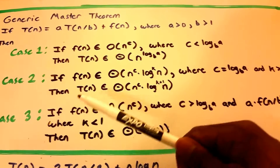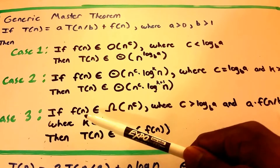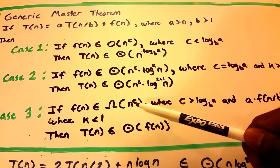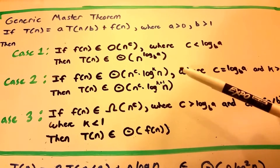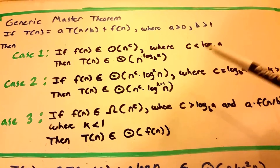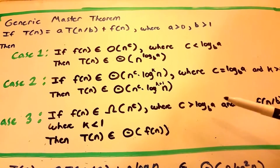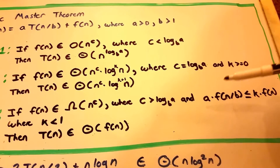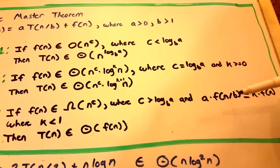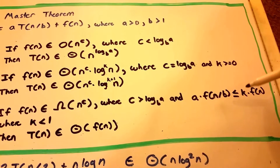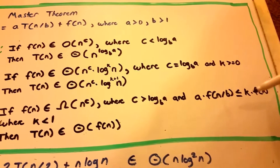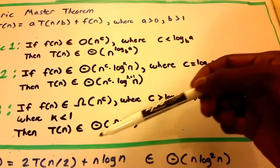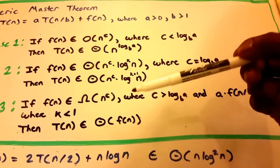And in Case 3: if our function of n belongs to big O of n to the power of C, and C is greater than log base B of A, and A times some function of n divided by B is less than or equal to K times some function of n, where K is less than 1, then T of n belongs to theta of F of n.